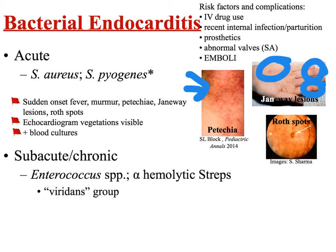The last thing you may see if you think to look for it are Roth spots — pinpoint areas of hemorrhage on the retina. Pathophysiologically these are exactly like petechia, except the hemorrhage is in the retina instead of dermal tissue. The way you diagnose acute endocarditis is by performing an echocardiogram and blood cultures. Being able to see vegetations on the echocardiogram gives you a positive indicator, and positive blood cultures are confirmatory.